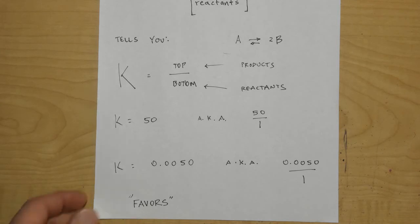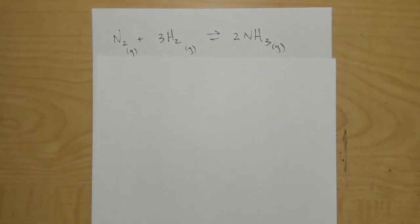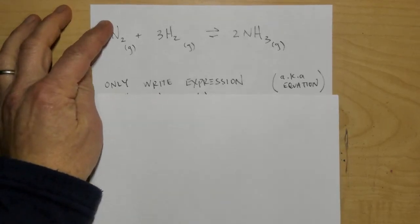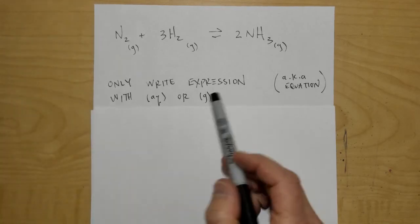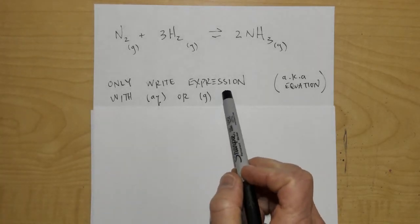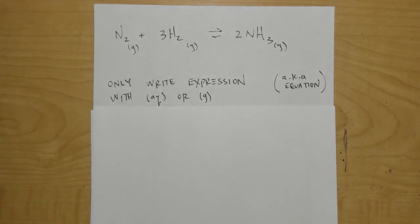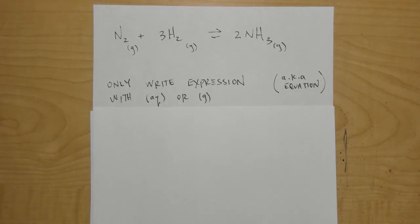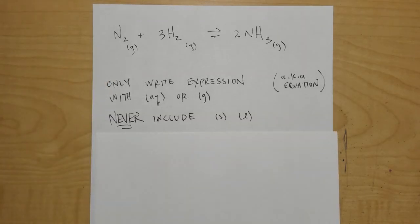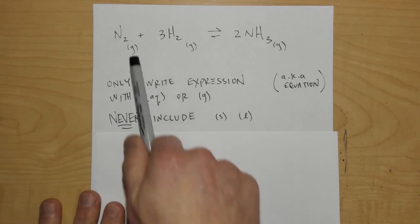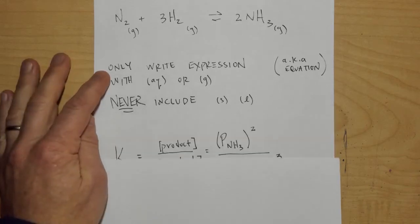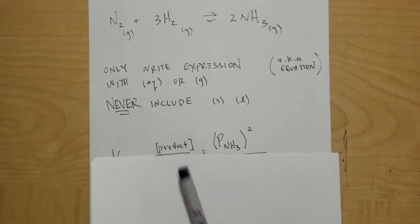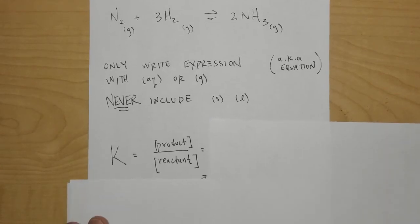Let's take an example reaction: N2 + 3H2 → 2NH3, and write the equilibrium constant expression. This is also known as the equilibrium constant equation. You only write this expression with aqueous or gaseous things — only things that can have concentrations or pressures. You never include solids or liquids. Products on top divided by reactants on the bottom, raised to the power of their coefficients.